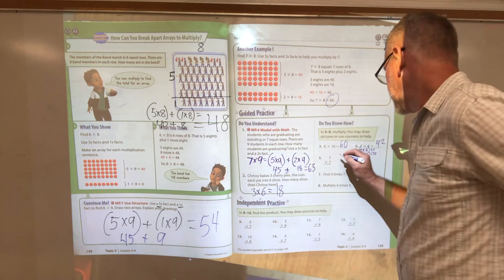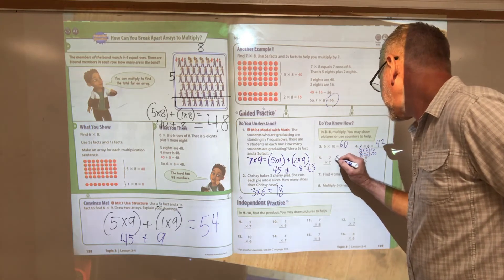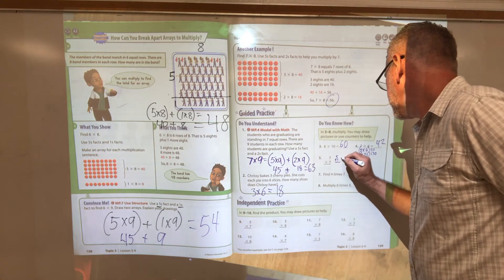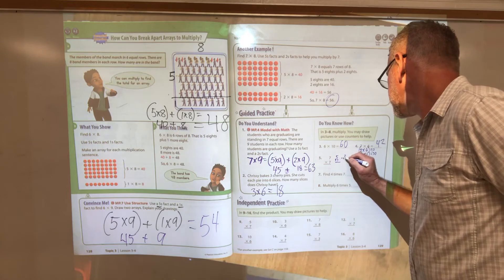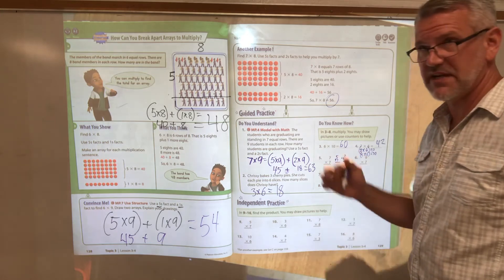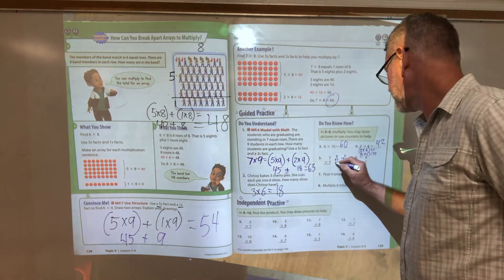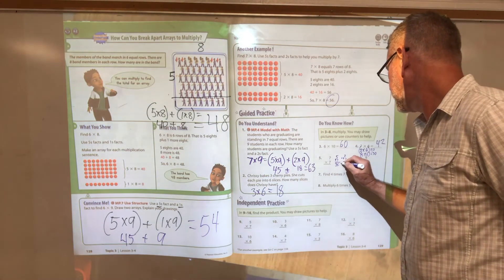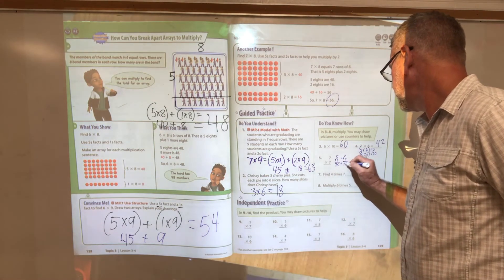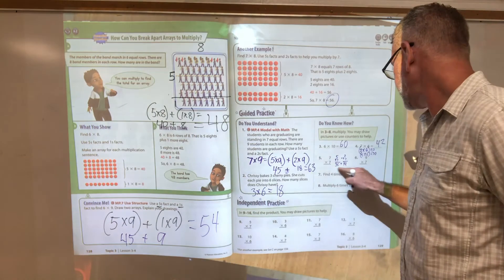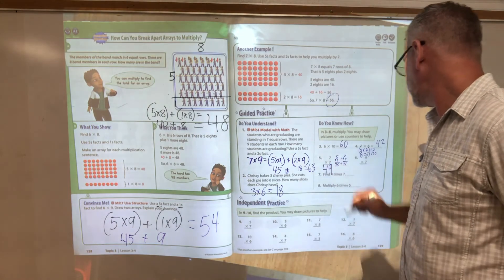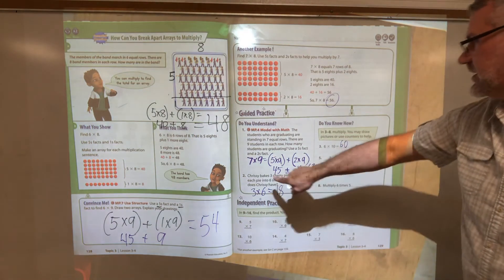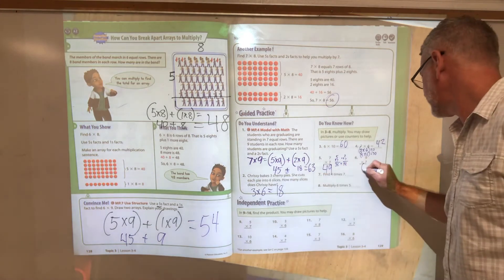Seven times seven, I'm going to break that into five times seven plus two times seven. Five times seven, if I count up with my counting by fives, I get thirty-five. Plus two times seven is seven plus seven. Add those together, I'm going to get forty-nine.